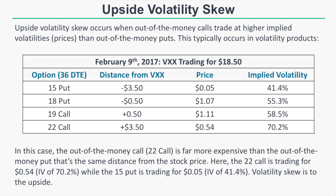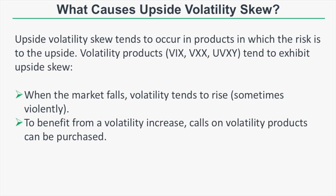Upside volatility skew tends to occur in products where the risk is to the upside. This is common in volatility products such as VIX options, VXX options, and UVXY options, because those products tend to explode higher when the market falls. To benefit from those upside movements, calls on those products can be purchased, which explains why out-of-the-money calls trade with higher prices and implied volatilities than out-of-the-money puts.